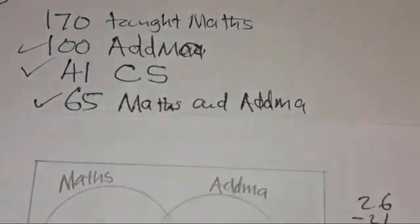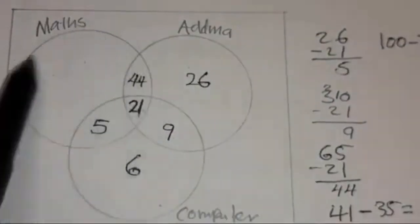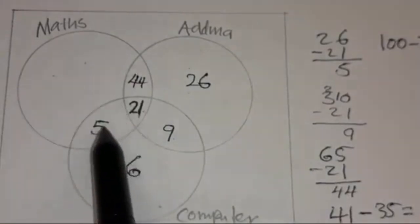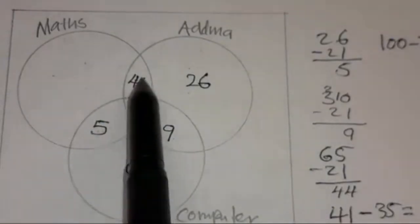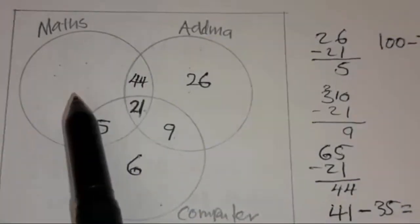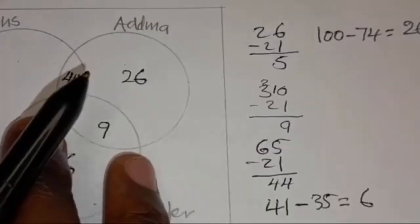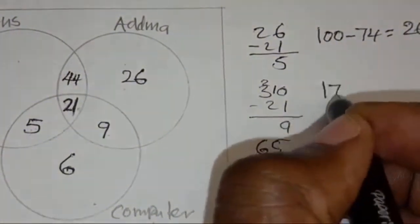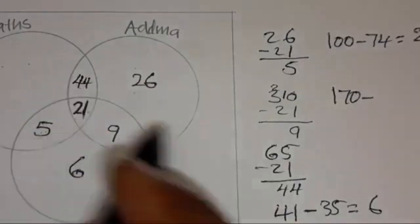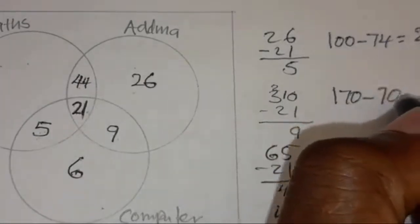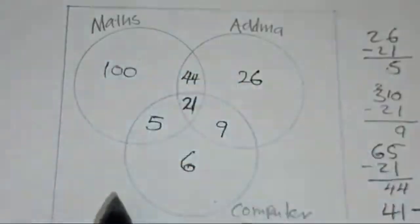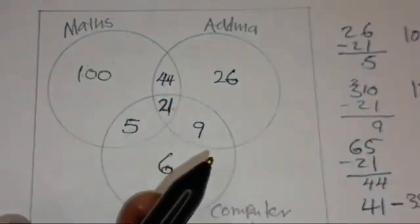170 teachers taught Maths. Set Maths is this one. To find the number that taught Maths only, add 44 plus 21 plus 5, which gives 70, then subtract from 170: 170 minus 70 equals 100. So 100 teachers taught Maths only.